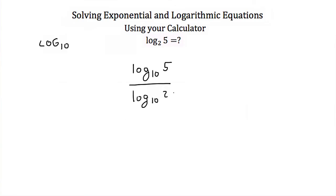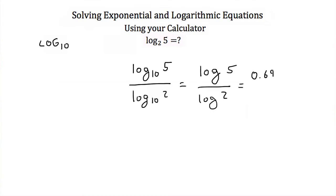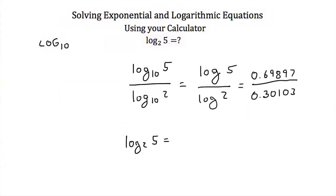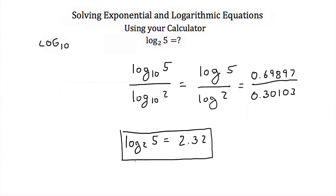The log base 10 is just the standard log on a scientific or graphing calculator, so this is the log of 5 divided by the log of 2. The log of 5 is approximately 0.69897 and the log of 2 is approximately 0.30103. Doing this division, we find that the log base 2 of 5 is equal to approximately 2.32. So that's how you use the change of base formula, and that completes the tutorial on solving exponential and logarithmic equations.